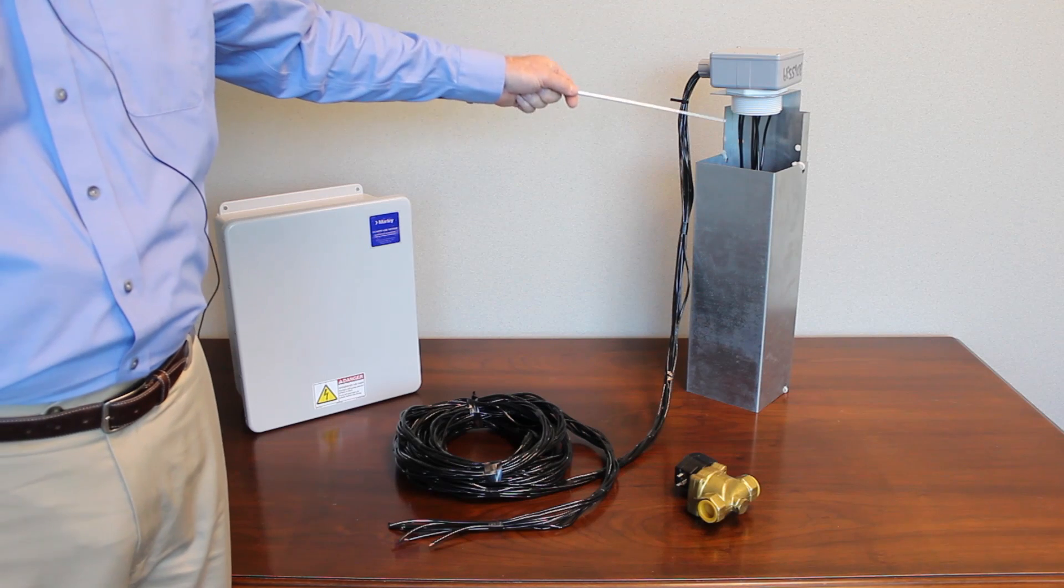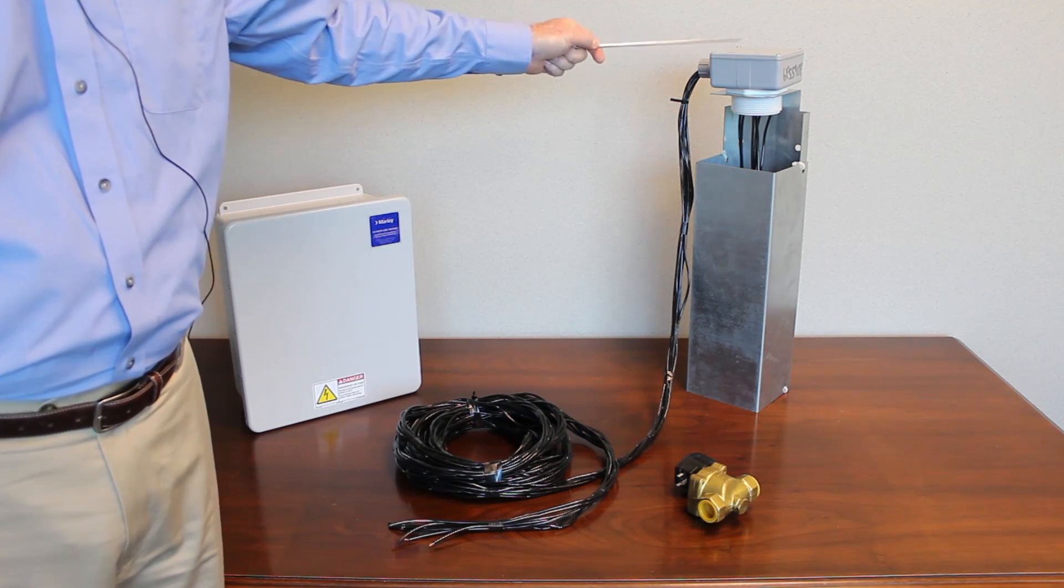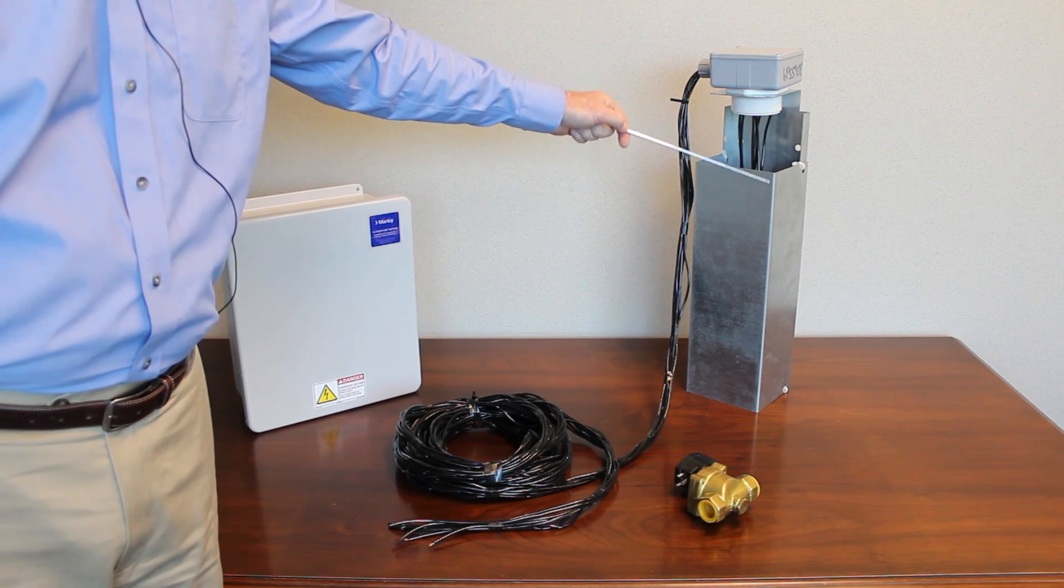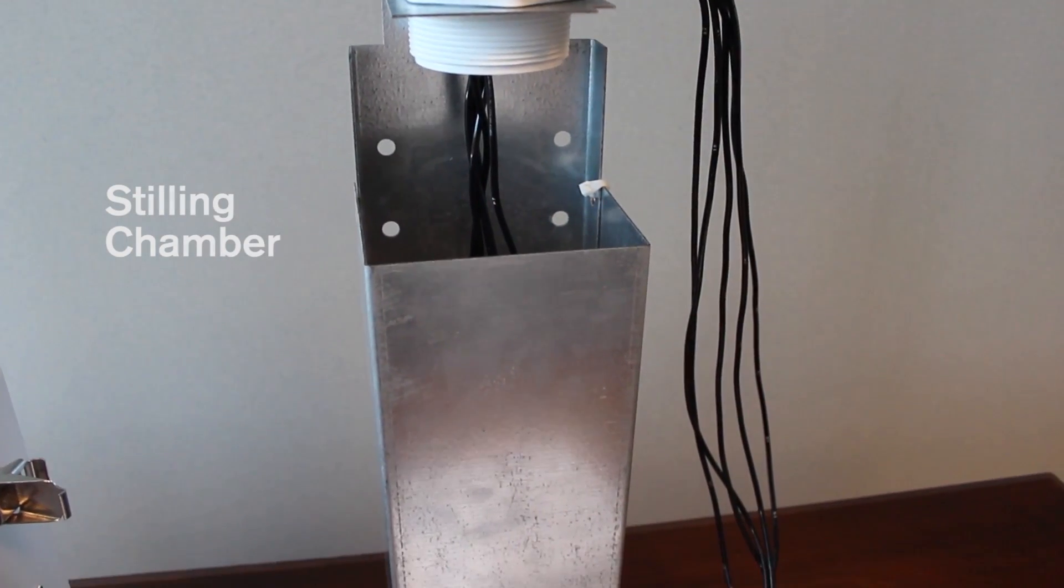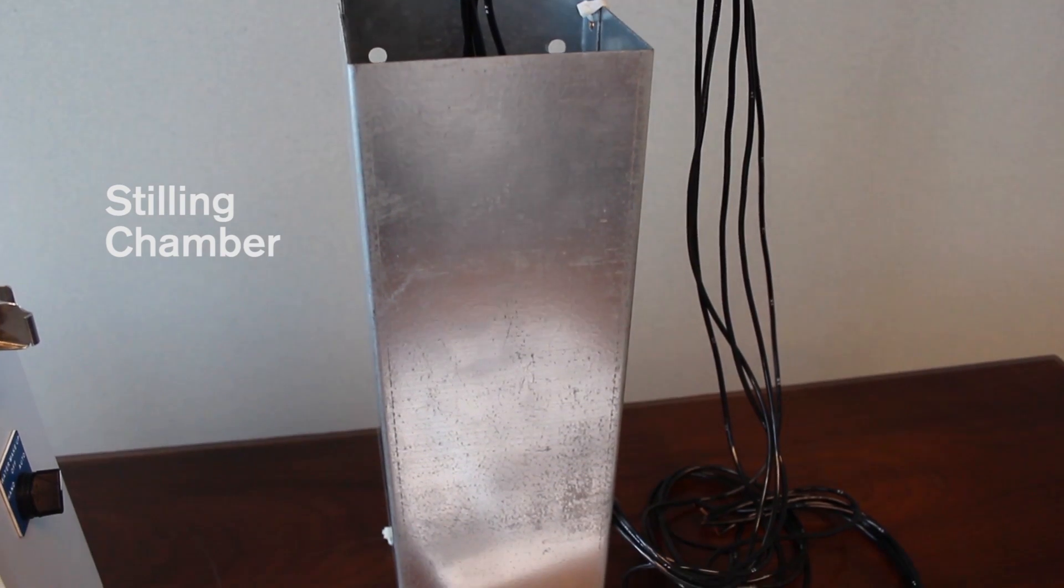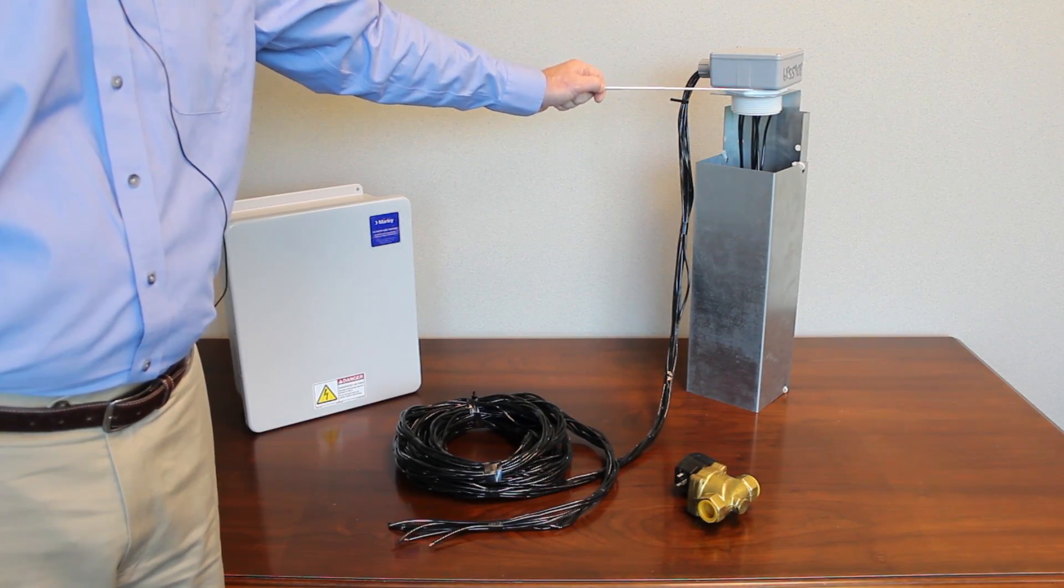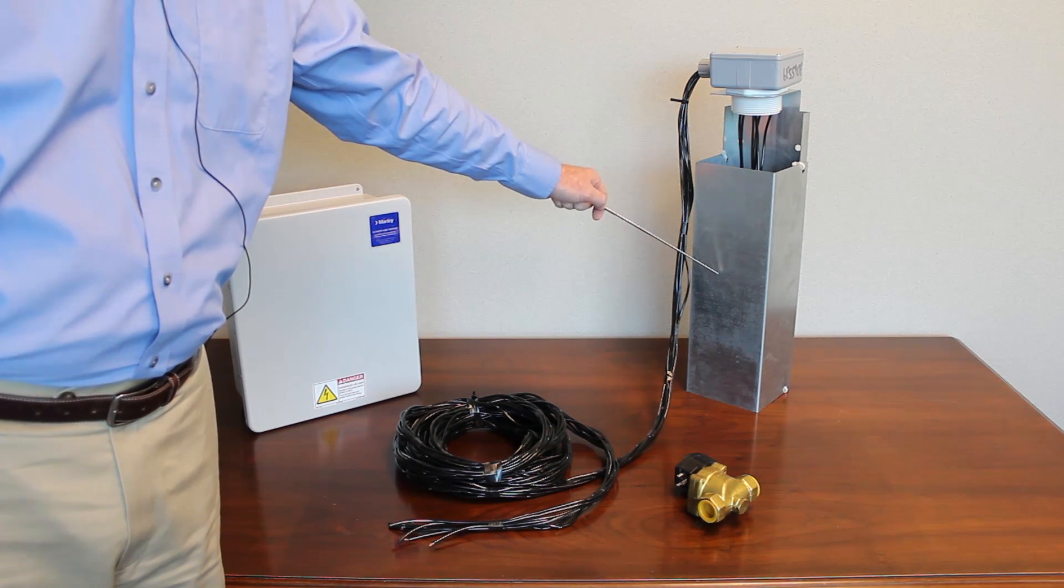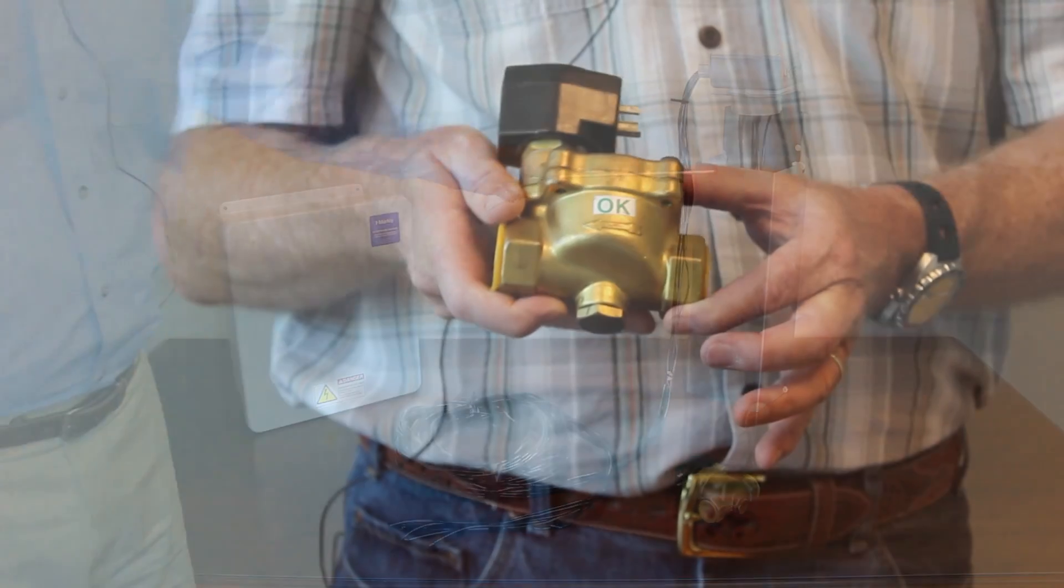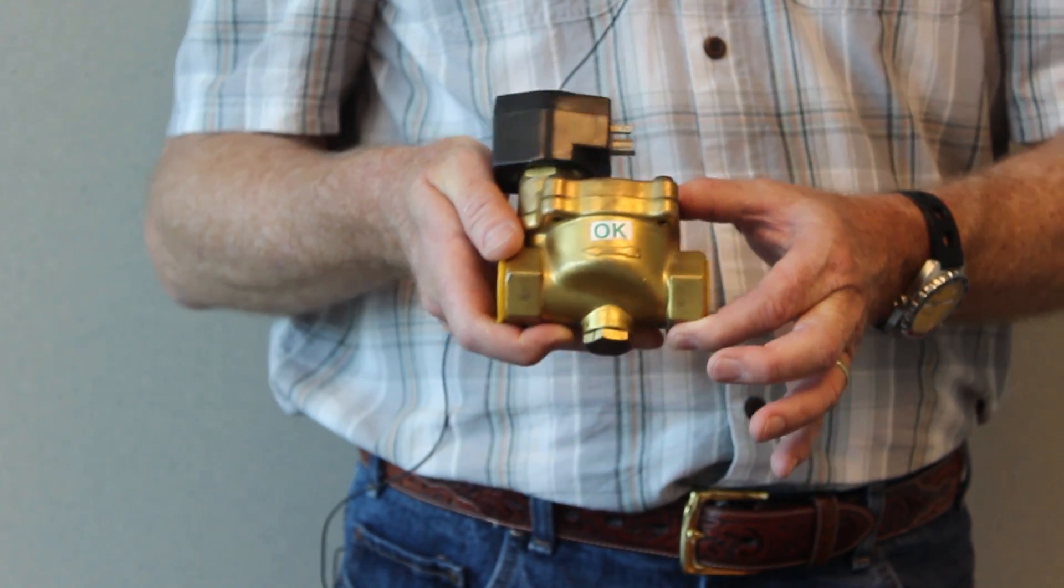The other component is the probe set with a conduit box at the top and the hanging probes coming down to the third component, which is a stilling chamber. The stilling chamber resides in the basin of the cooling tower and its sole purpose is to not only support the probe set but also to calm the water so you get an accurate reading on the probes. And then the final component of the system, if you want makeup, is a makeup solenoid valve.